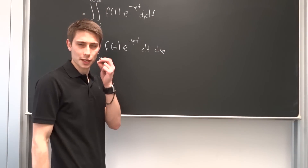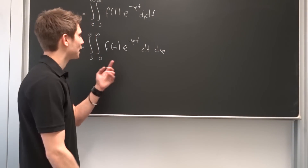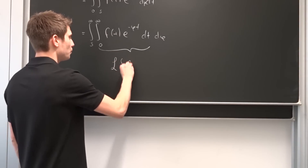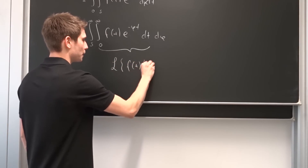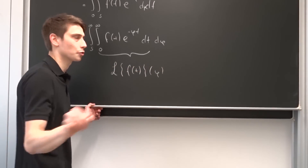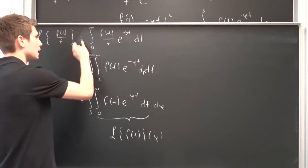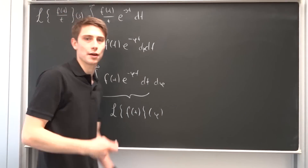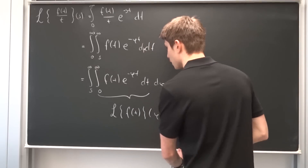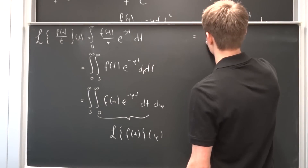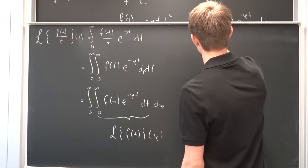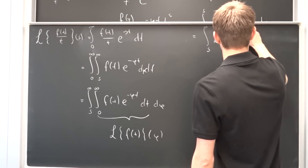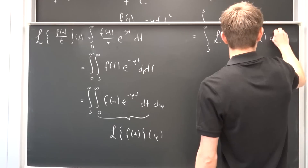So let's switch the order of integration. This is now the integral from s to infinity of the integral from 0 to infinity of f(t) e to the minus φt dt, dφ. If you have a sharp eye, you might notice that the inner integral is just the Laplace transform of f(t), in terms of φ this time. Don't forget the original Laplace transform up here is a function in terms of s — so we have a change of variable.